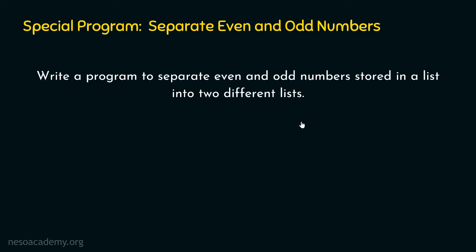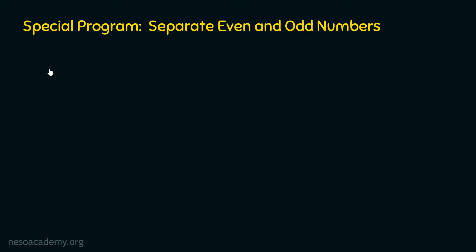Now that we know the problem statement, let's write a program. The first step is to create a list of numbers from 1 to 24. In order to do that, we need to use the range function and the list function. We create the list li like this: li equal to list(range(1, 25)). This range function will generate a sequence of numbers from 1 to 24, and the list function will convert that sequence to a list.